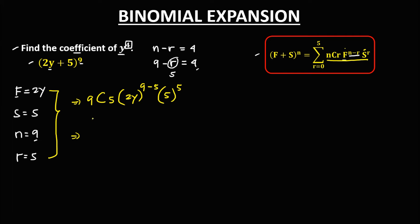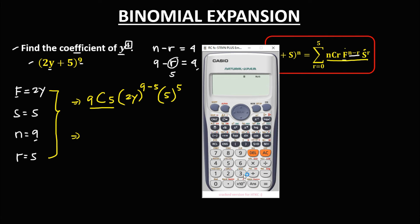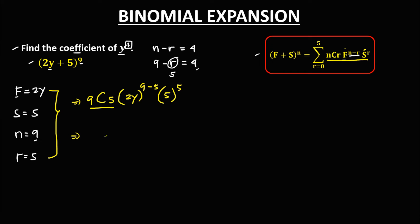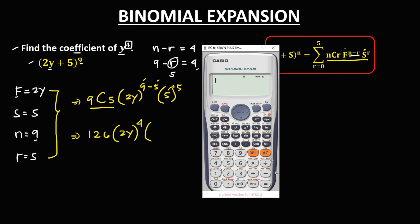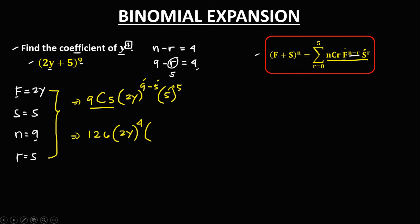Simplify: 9 choose 5 equals 126. So this becomes 126 times 2y to the power 4, then times 5 to the power 5. 5 to the power 5 equals 3,125.